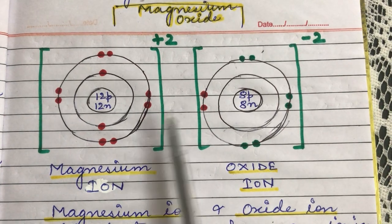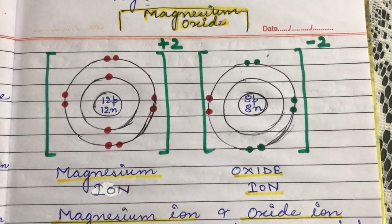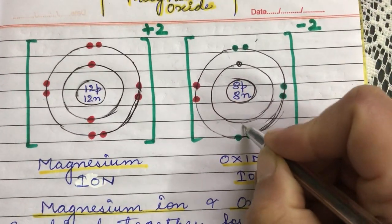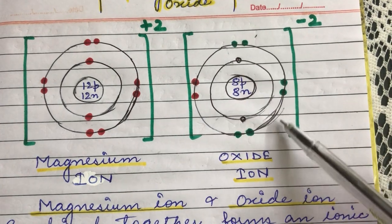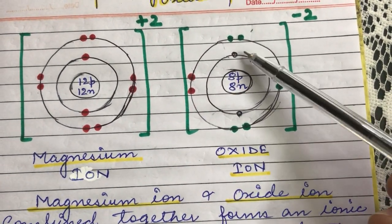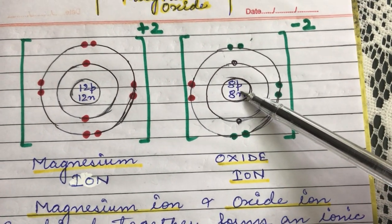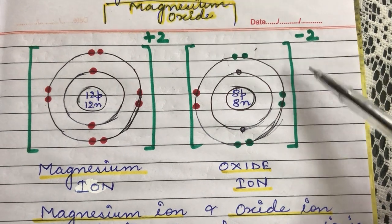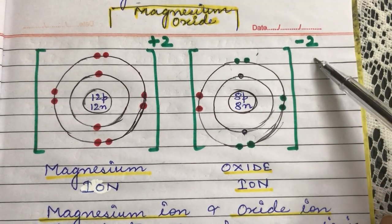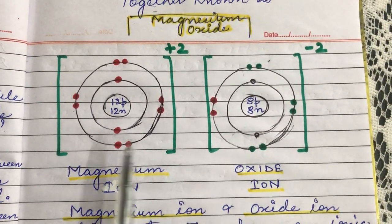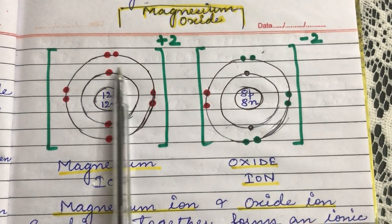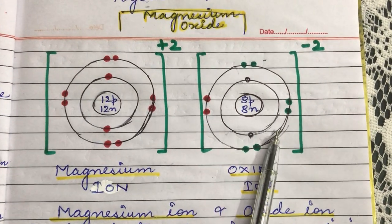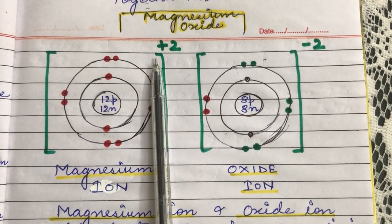Oxygen has gained two electrons — shown in different colors to clearly identify the change. It now has 2 electrons in the first shell and 8 electrons in the second shell, totalling 10 electrons. Protons are still 8. So −10 plus 8 gives −2. That is how oxygen, when it forms an oxide ion, gets a 2-negative charge. Looking at both ions, the Mg²⁺ ion has 8 electrons in the outermost shell and is stable, and the O²⁻ ion also has 8 electrons in the outermost shell and is stable.